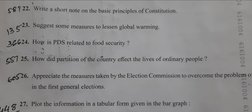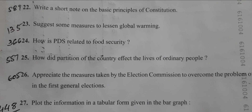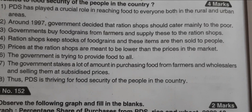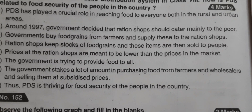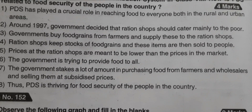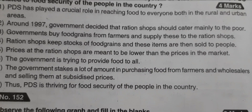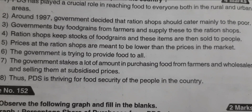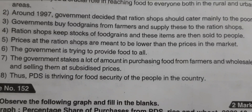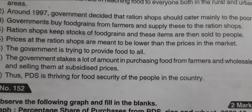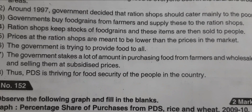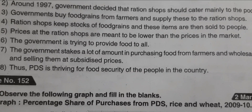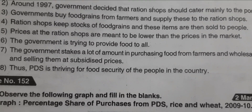Question 24: How is PDS related to food security? PDS has played a crucial role in reaching food to everyone, both in rural and urban areas. Around 1997, the government decided that ration shops should cater mainly to the poor. The government buys food grains from farmers and supplies these to ration shops, which sell them at prices lower than market prices.